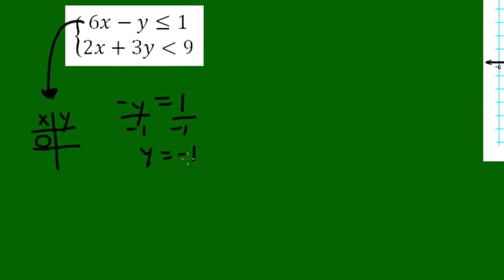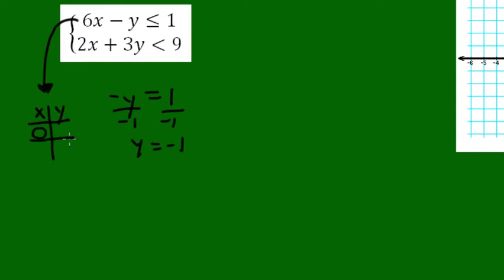And we're going to get y equals negative 1. So I put negative 1 to the table. So there's my first ordered pair. 0, negative 1 is a point on this line.